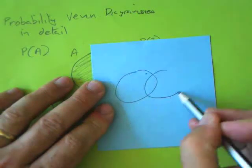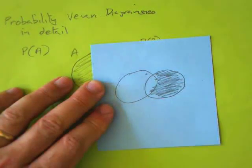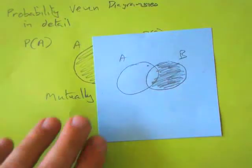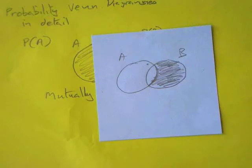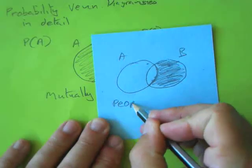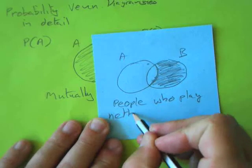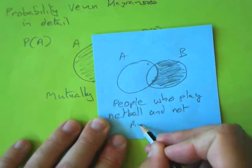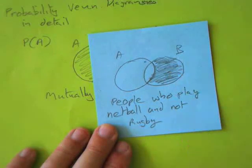Now remember that A is rugby and B is netball. Please describe how you would define that shaded area there. This is A, this is B. How would you describe those people? These are people who play netball and not rugby. Somebody said 'people who play only netball' — that would be OK too, that would be reasonable. These people play netball but they don't play rugby.